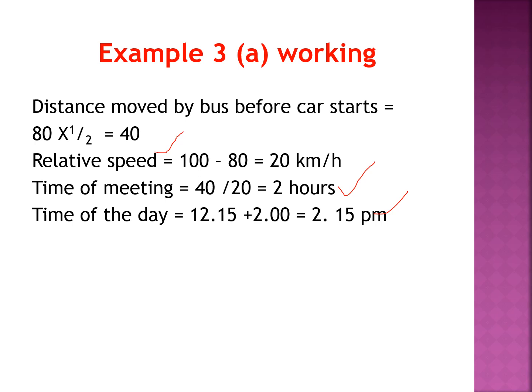Since they are moving in the same direction, relative speed = 100 − 80 = 20 km/h. Time for the car to catch the bus = 40 ÷ 20 = 2 hours after the car started at 12:15 p.m. So the car overtakes the bus at 2:15 p.m.